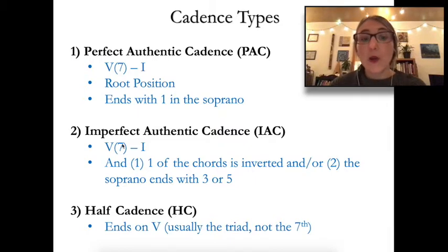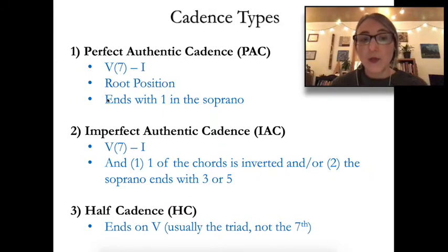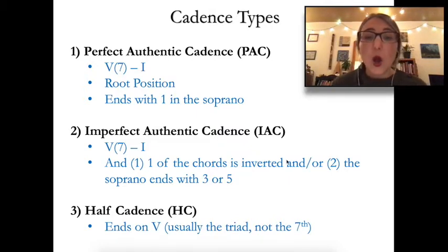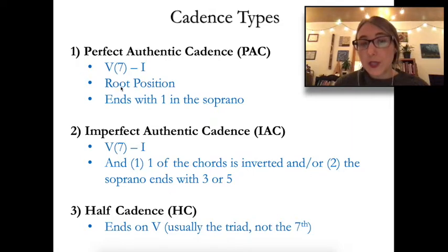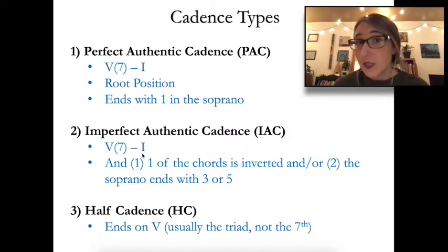All three of these criteria need to be met for it to be a PAC. The IAC, or Imperfect Authentic Cadence, also goes five to one, but for an IAC one of these two things is not met. Maybe one or both chords are inverted — you might have a five-six to a one — or you have something other than scale degree one in the soprano, like a three or a five over the one chord.